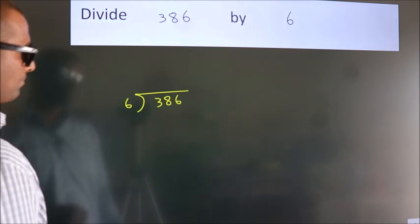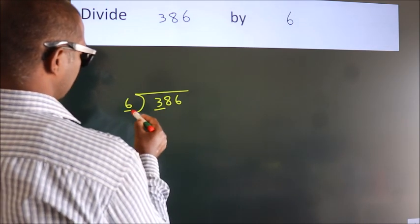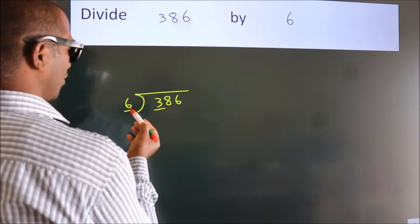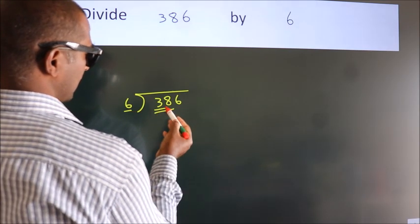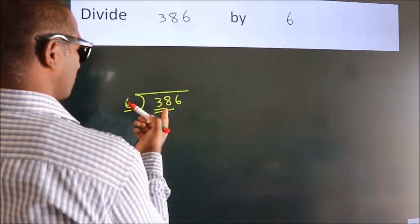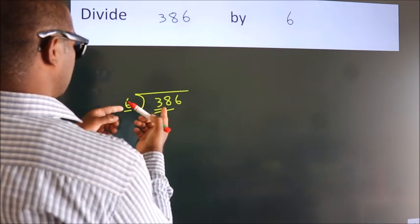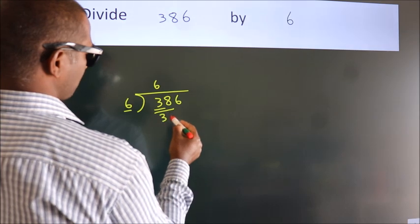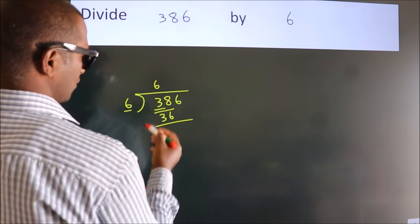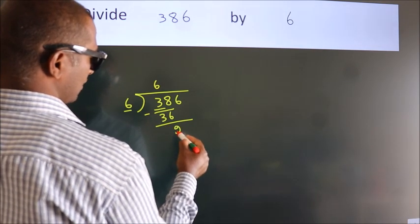Next, here we have 3. Here 6. 3 is smaller than 6, so we should take 2 numbers: 38. A number close to 38 in the 6 table is 6 sixes, 36. Now we should subtract. We get 2.